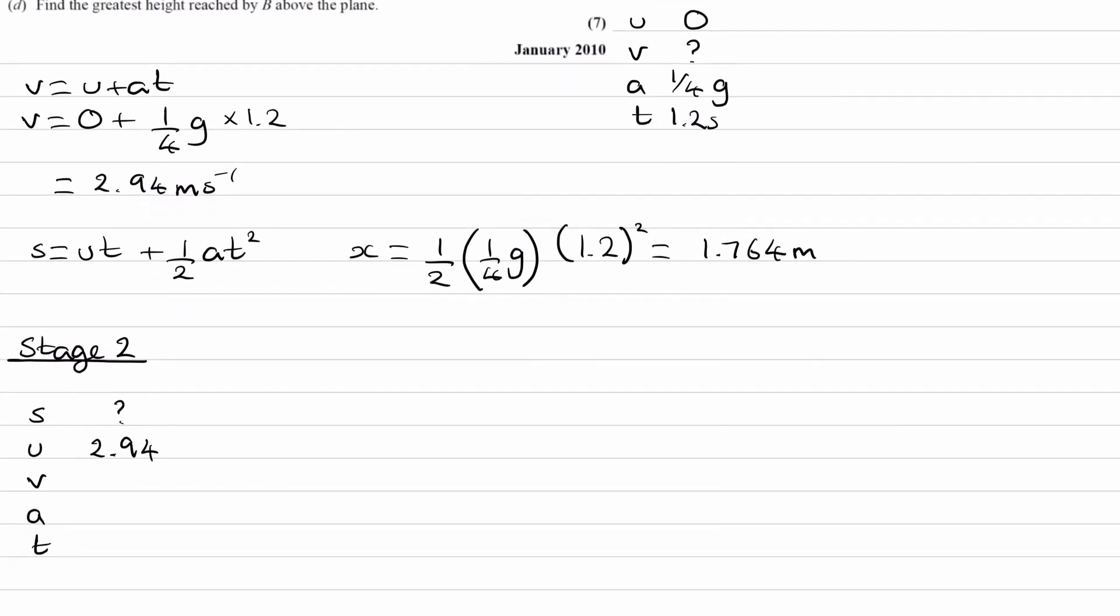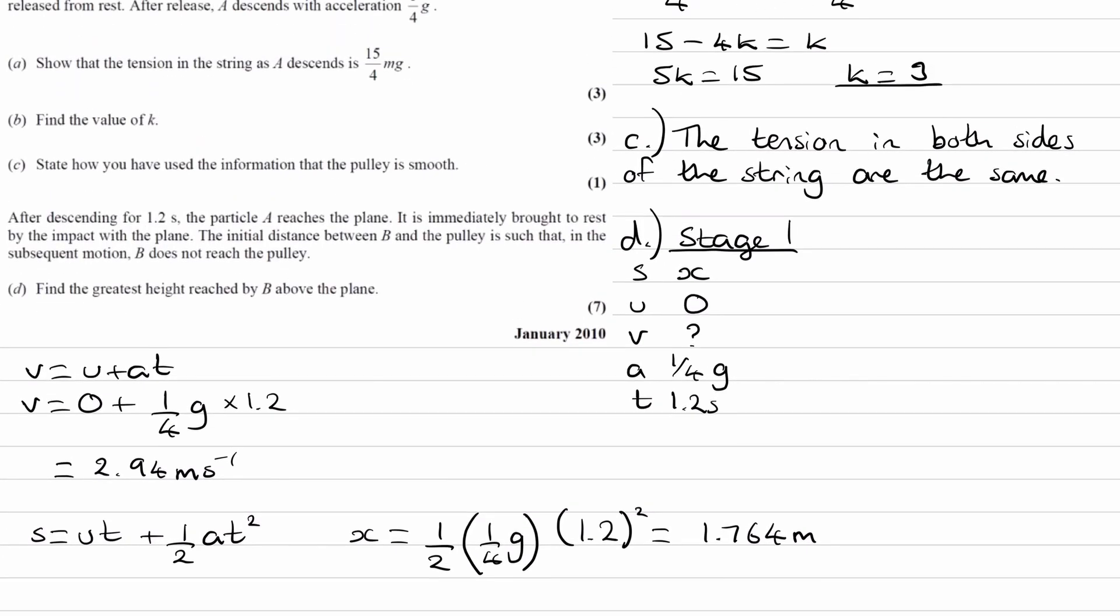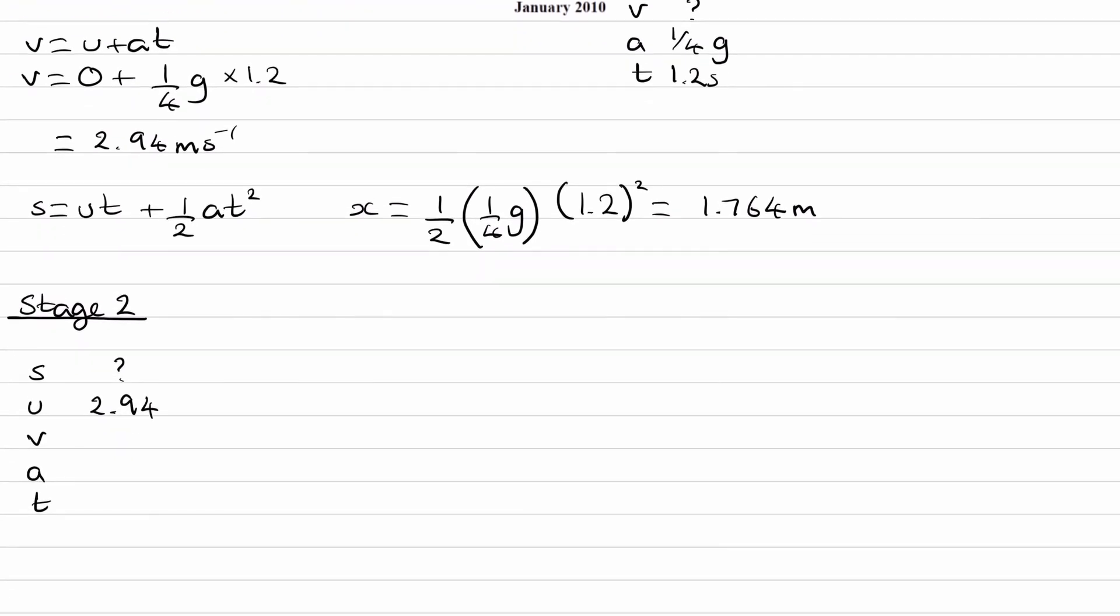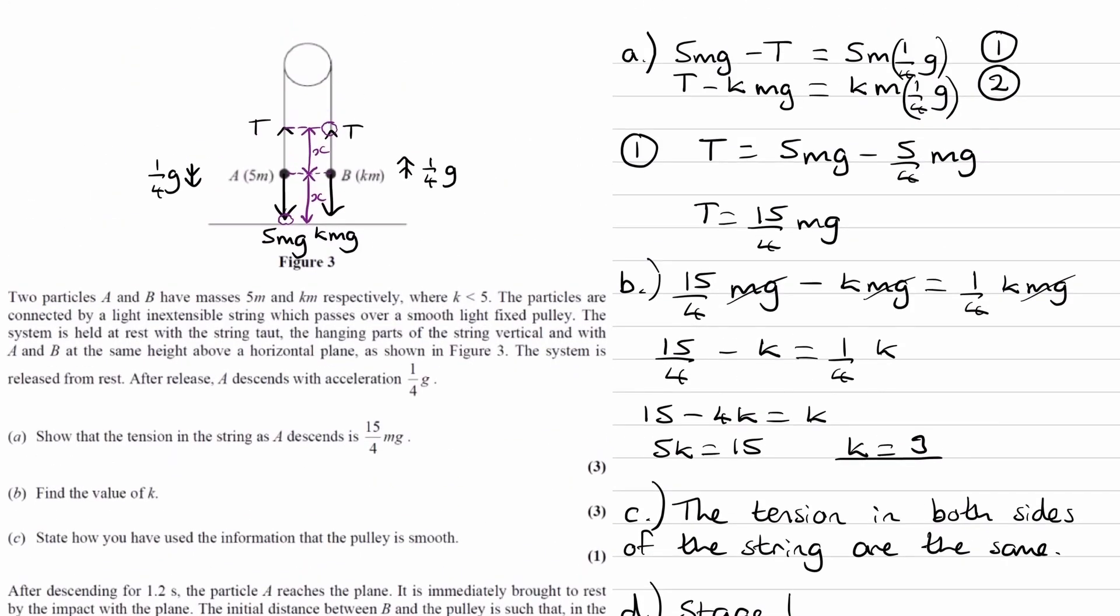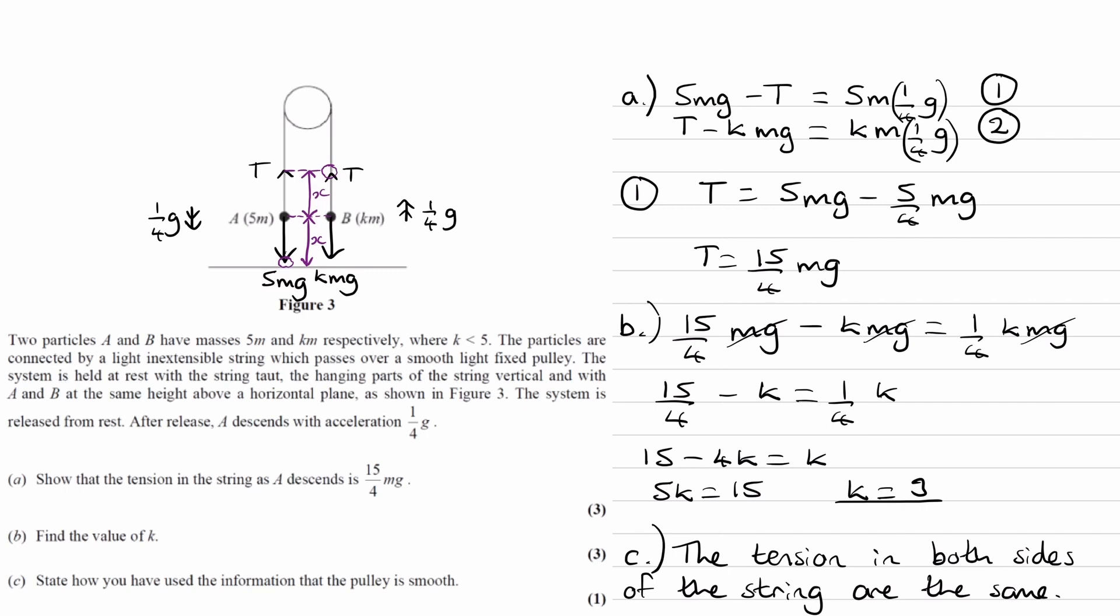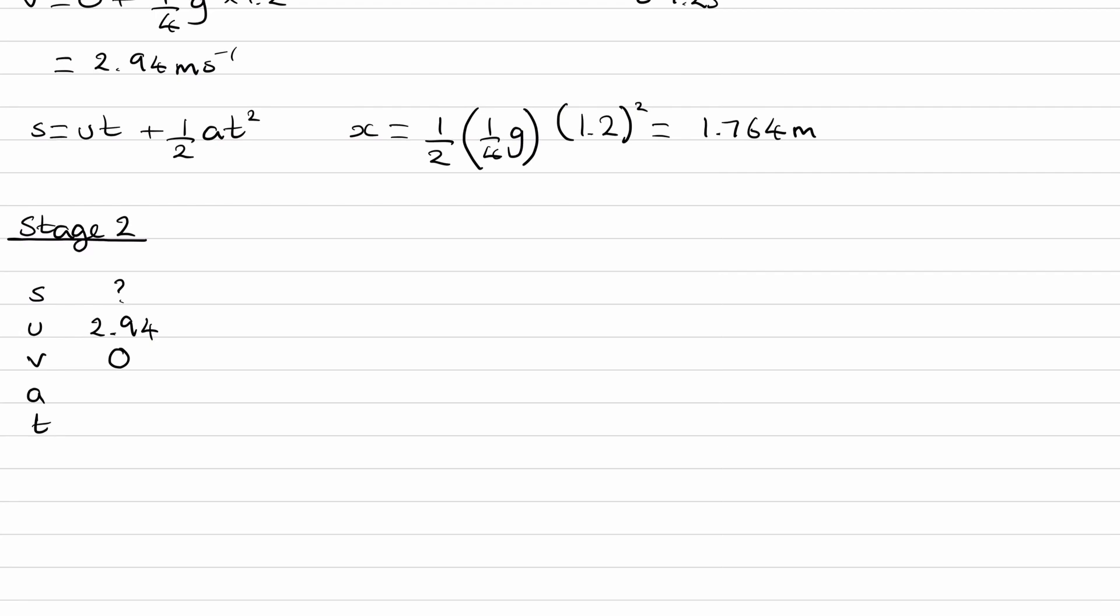The distance is what we're trying to work out. Now we're asking the question to work out the greatest height reached by B above the plane. Once B has reached its greatest height, its speed will be zero. So the final velocity for this stage would be zero. And remember we were saying that when A hits the ground, then B continues to move upwards. The string then goes slack. There's no more tension in the string. The only force on B will then be its weight. And if an object only experiences its weight force and no other forces, its acceleration would be 9.8.